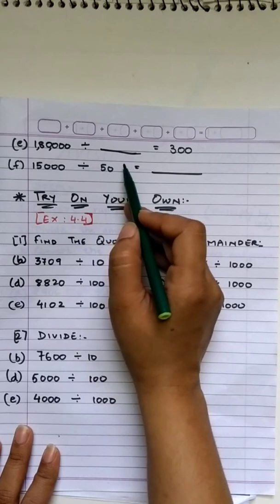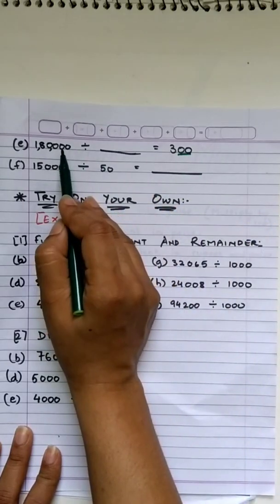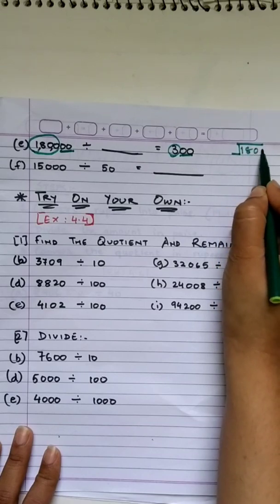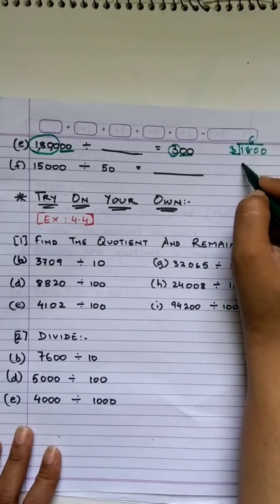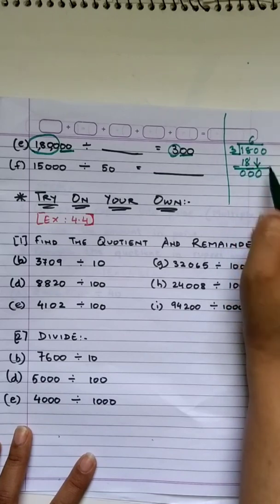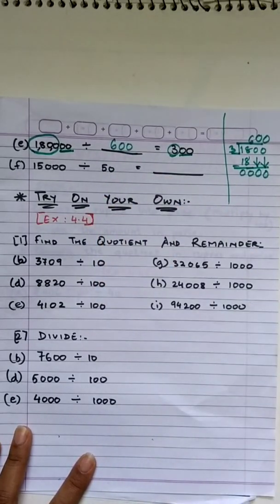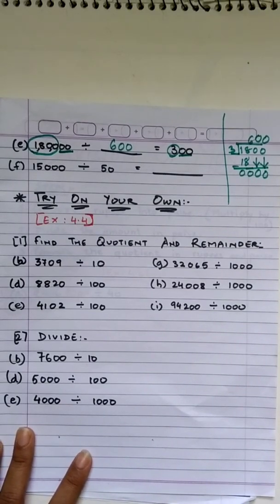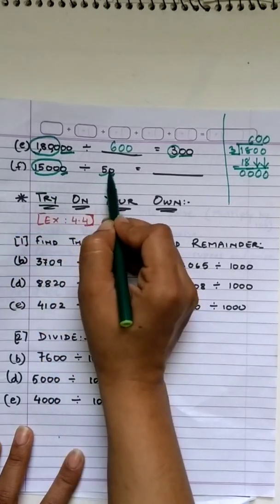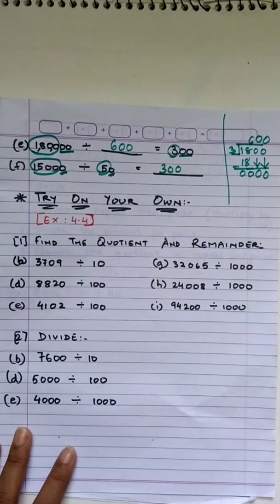Two more examples. 180,000 divided by blank gives 300 — find the divisor, so we divide. Hide the last two zeros, divide 1,800 by 3: answer is 600, so the divisor is 600. Next: 15,000 divided by 50 — find the quotient. Hide the last zero, divide 1,500 by 5. Orally: 5 threes are 15, giving 300. Answer is 300.